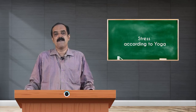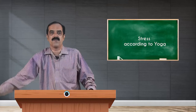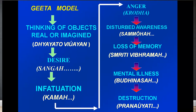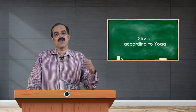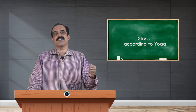Buddhinashat vinashyati — when buddhi is lost, we are in a complete downward spiral. That is the difference between man and animal: God has given us the great gift of buddhi. Stress starts at the mental level and finally makes you an animal being, not a human being. So according to Bhagavad Gita: repeated thinking leads to desire, desire to infatuation, kama to krodha, krodha to loss of memory, loss of memory to loss of buddhi, and total destruction of personality.